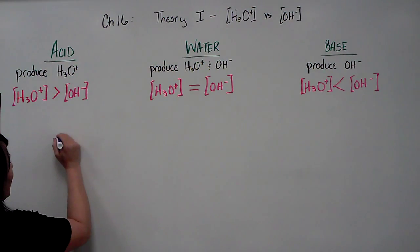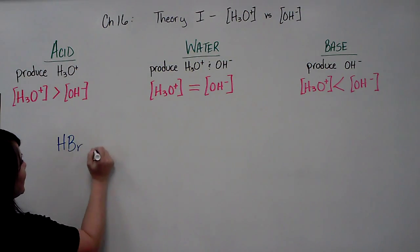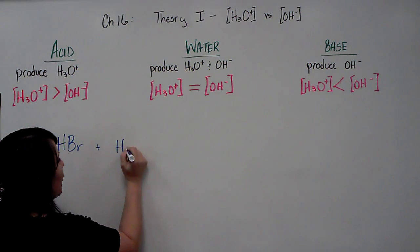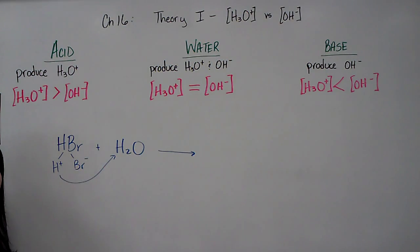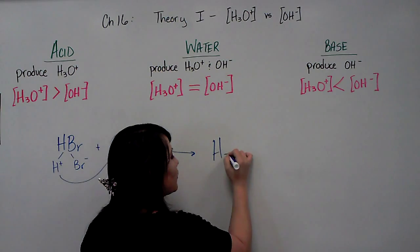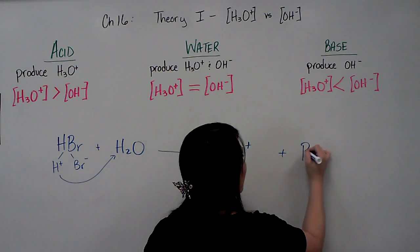For example, if you had hydrobromic acid and you placed it in water, the hydrogen and the bromide would separate or ionize in the solution. The hydrogen ion and the water would get together and you would get hydronium and bromide.